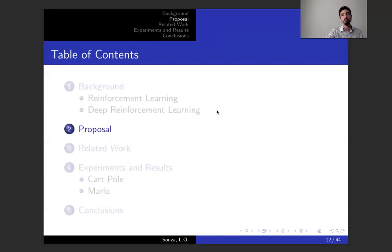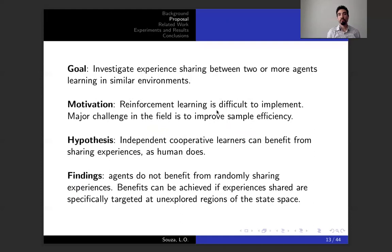That covers the background. I move to the proposal. Our goal was to investigate experience sharing between two or more agents which are learning in similar environments. Our motivation is that reinforcement learning is difficult to implement. A major challenge in the field is to improve sample efficiency. We had this hypothesis that independent cooperative learners could benefit from sharing experiences the same way humans do. Our findings is that agents don't benefit from just randomly sharing experiences, as we first expected. But benefits can be achieved if the experiences shared are specifically targeted at unexplored regions of the state space. I'm going to show this better on the results.